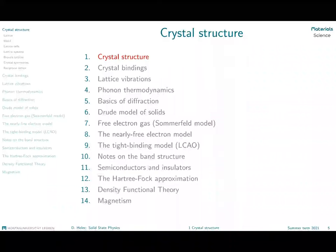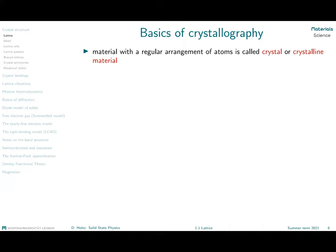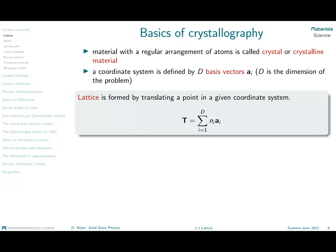Our first lecture is about crystal structure. We need to define a few basic terms. We will be talking about crystalline materials — materials that exhibit a regular arrangement of atoms. When they show this regular arrangement, we can use some basic mathematical tools to describe it, and we will define a coordinate system with basis vectors.